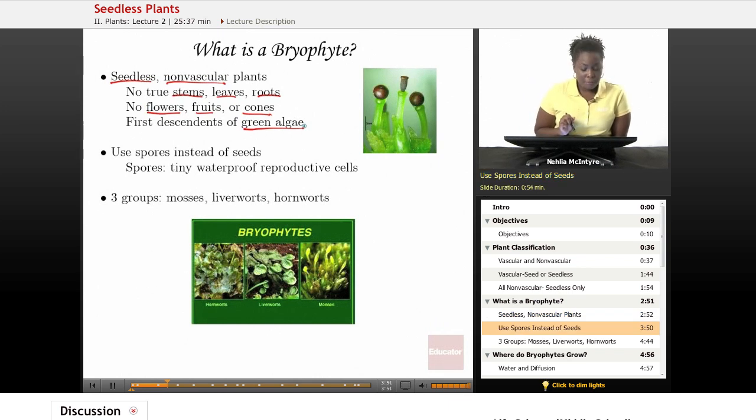In general, bryophytes, in order to make more bryophytes, they use what we call spores instead of seeds. These are the reproductive organs of the plants, which help the plant to make more of its own kind.